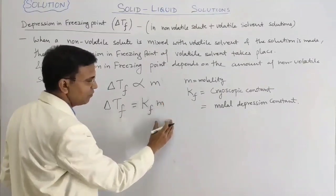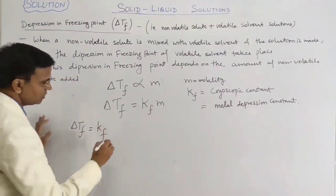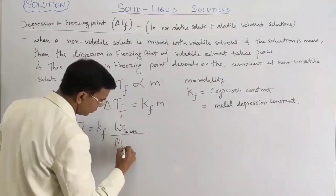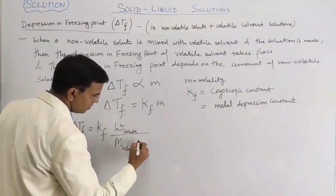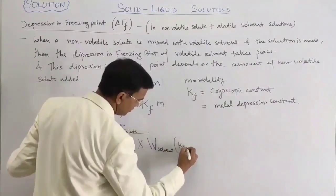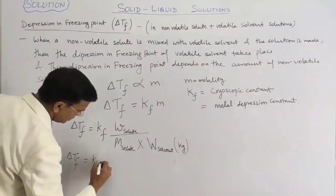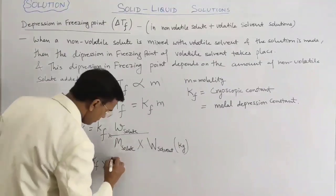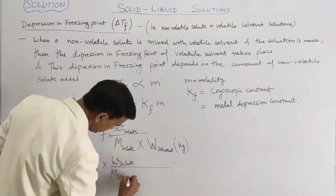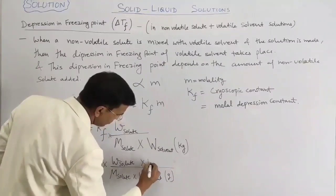Molality can be factorised, so delta Tf equals Kf times M, where M is the weight of solute upon molar mass of solute, divided by the weight of solvent in kg.